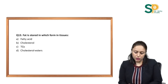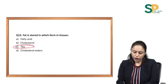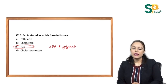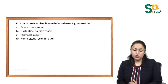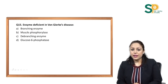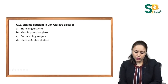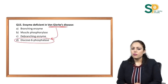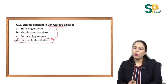Triglyceride is made up of 3 fatty acids and 1 molecule of glycerol. Next question: which mechanism is seen in xeroderma pigmentosa? It is nucleotide excision repair. Then: the enzyme deficient in Von Gierke's disease is glucose-6-phosphatase. This is type 1 glycogen storage disease and a very important topic. Read all the topics covered in this video as they are frequently asked in exams.